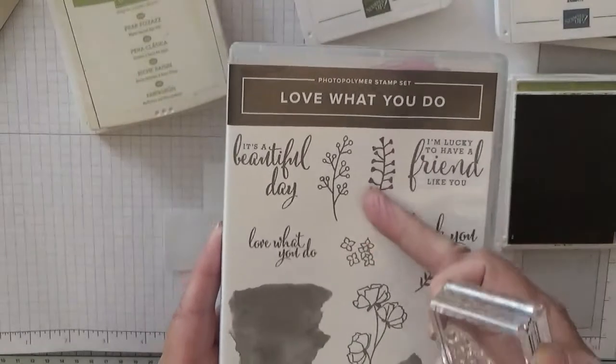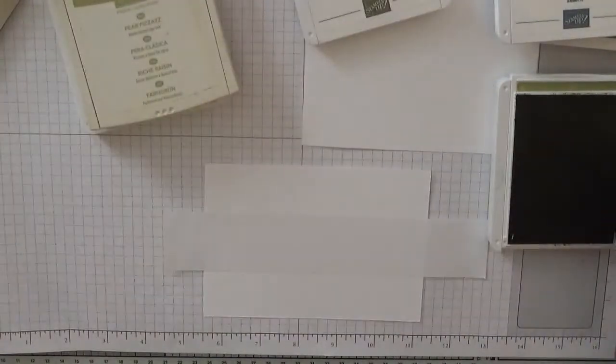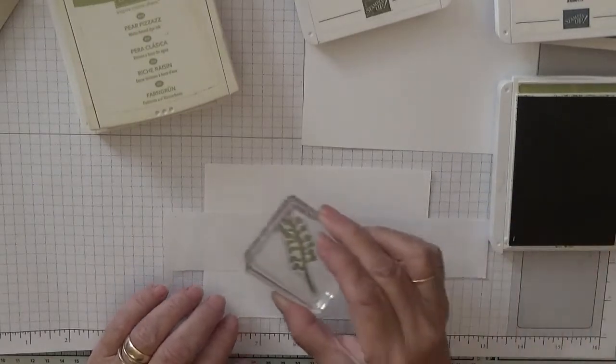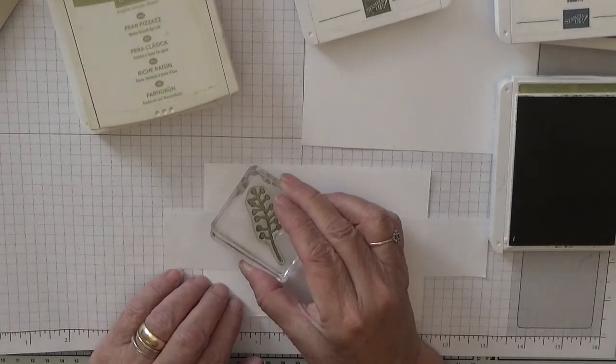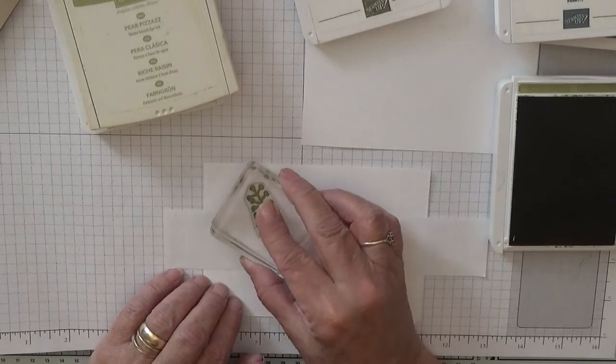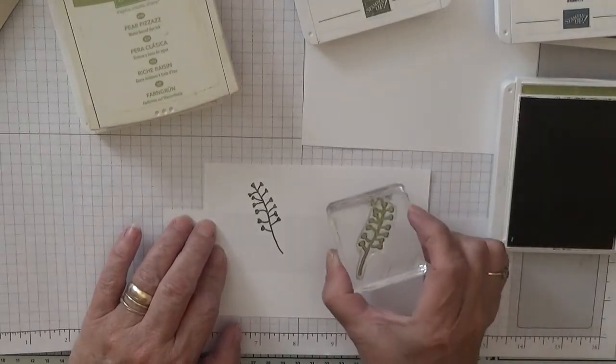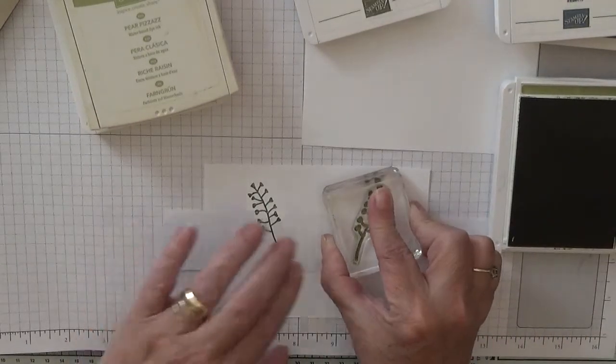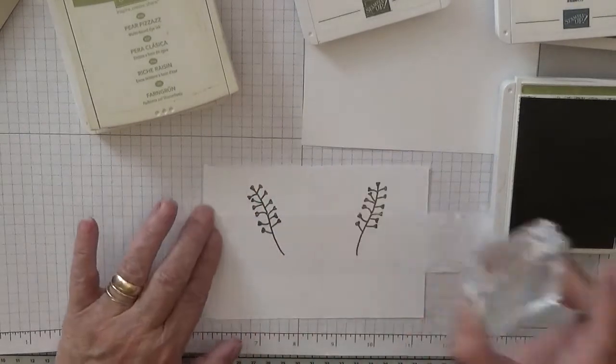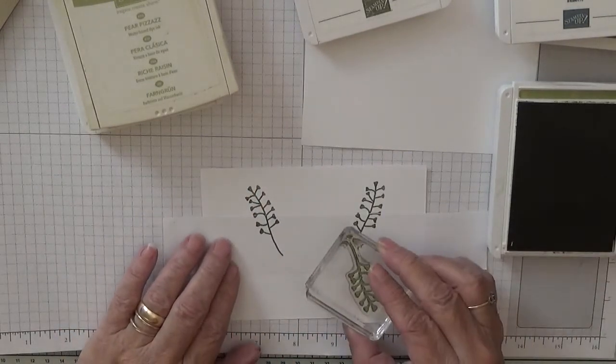And Old Olive, we're going to use the leaf out of Love What You Do. I've also got that one there, and that's the one we're going to use first. So ink that up and stamp. Do I stamp it off? No. Stamp it down and do one that side. Turn it round and do one on the bottom.